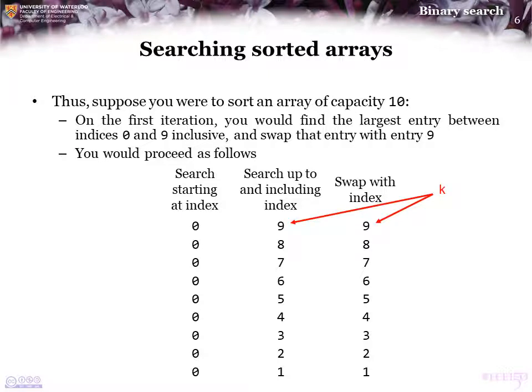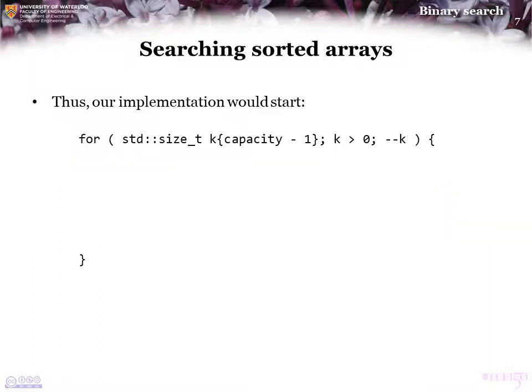To implement this, notice that we could have a loop variable k that starts at 9 and goes all the way down to 1. We would write this as a for loop where the capacity is 10, so we initialize loop variable k with capacity minus 1. With every single step, we decrement the loop variable, and we continue iterating as long as the loop variable is greater than 0. So we could start our implementation as follows: a for loop where k is initialized to capacity minus 1, decremented each step, and continues so long as k is greater than 0.